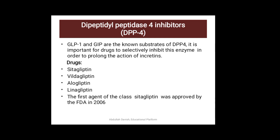DPP-4 inhibitors are FDA-approved drugs. The FDA has approved these drugs and they are also known as gliptin class drugs. The list of FDA-approved DPP-4 inhibitors includes Sitagliptin, Saxagliptin, Linagliptin, and Alogliptin.